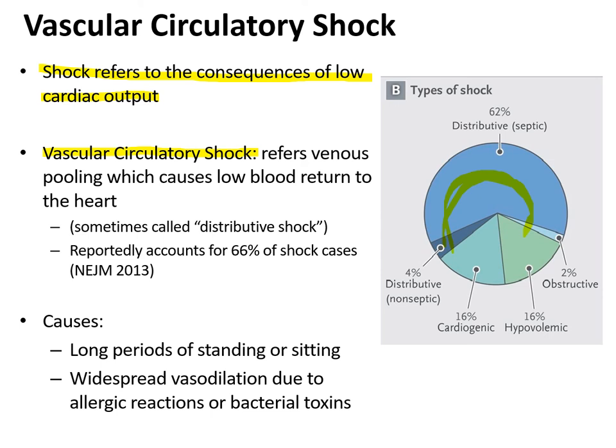Vascular shock can be caused by standing for long periods, but that's usually not enough to cause severe fainting or a lack of blood return to the heart. It's usually caused by widespread vasodilation — or venodilation — throughout the entire body, because the immune system is sending out chemicals causing relaxation of the vessels, usually in response to a bacterial toxin or exposure to an allergen. Arteries get bigger, and the arterioles and venules certainly dilate. You don't get blood returned back to the heart, so the blood doesn't become oxygenated, and that becomes the real problem. Thank you — that's all for this presentation.